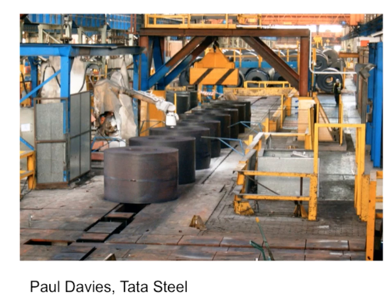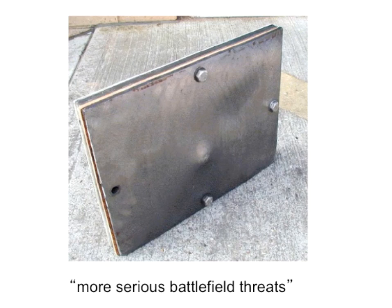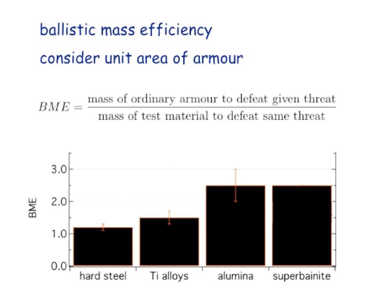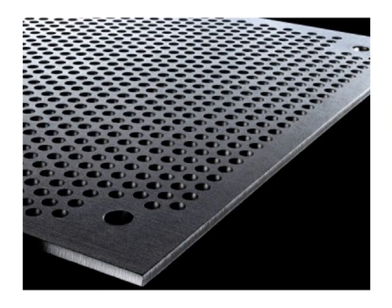You cannot process this material once it has a strength of 2,000 MPa. It is also a totally new armour that performs extremely well. The performance parameter is ballistic mass efficiency — the mass of ordinary armour divided by the mass of test material required to defeat a given threat, accounting for density. This outperforms everything except alumina, which can only take one shot. Remarkably, if you add holes to the armour it actually improves performance — the projectile gets deflected or crumbles at the edges. Without holes, ballistic mass efficiency is about 2; with 50% holes it rises to 3.